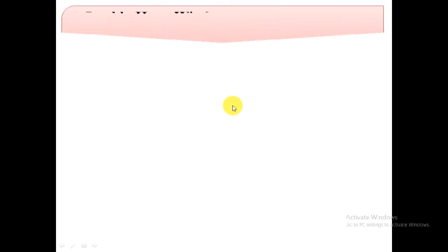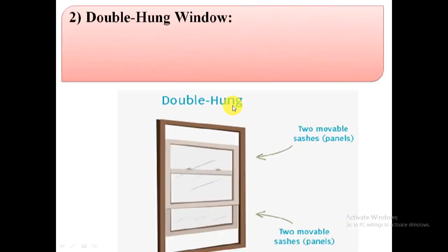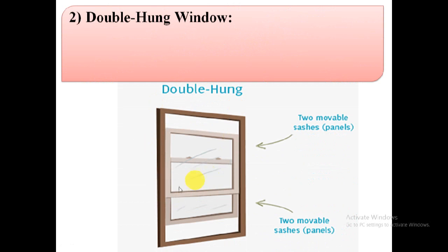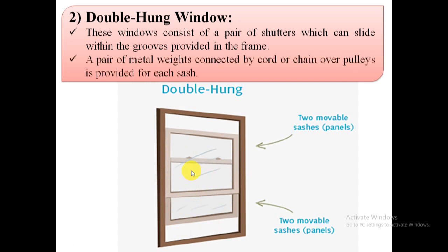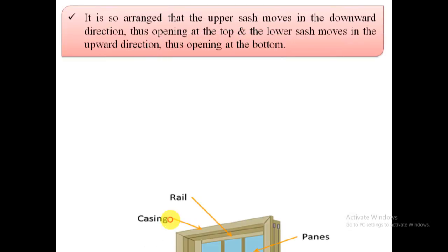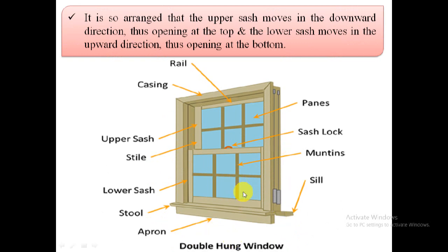The second type of window is the double hung window. This window consists of a pair of shutters which can slide within the grooves provided in the frame. A pair of metal weights connected by cord or chain over pulleys is provided for each sash. This double hung window is arranged so that the upper sash moves in the downward direction, opening at the bottom.